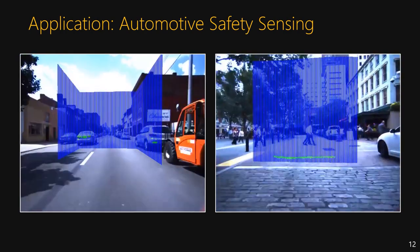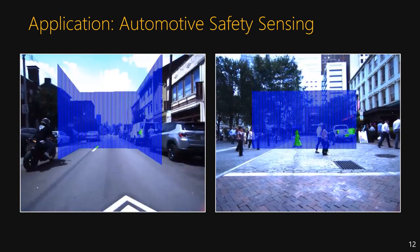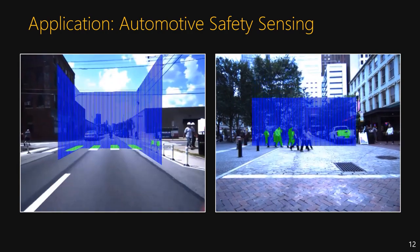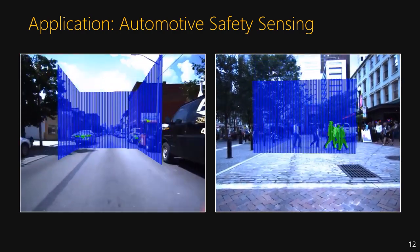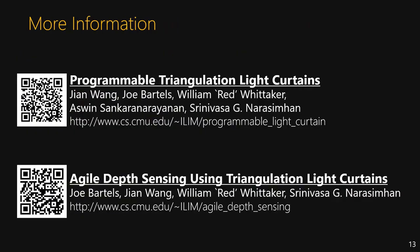One of the applications for light curtains is automotive safety systems. In this application, light curtains can be designed to form a virtual bumper around vehicles and provide high-resolution 3D detection of near-vehicle objects that LiDAR and camera systems struggle to capture effectively. As demonstrated here, programmable light curtains are a powerful new type of 3D sensor that enables selective 3D sampling of a scene and also work well in a variety of conditions and applications. For more information, please visit our websites to access related papers and more videos. Thank you.